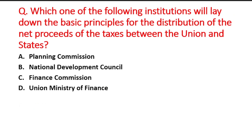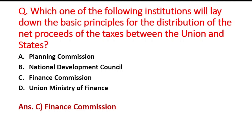Next question: Which institution will lay down the basic principles for the distribution of the net proceeds of taxes between the Union and the States? Option A is Planning Commission, B is National Development Council, C is Finance Commission, and D is Union Ministry of Finance. This is a function of the Finance Commission, so option C is the right answer.